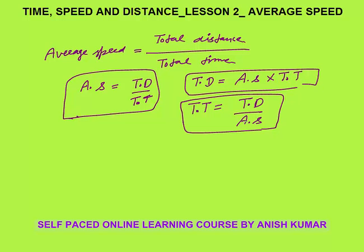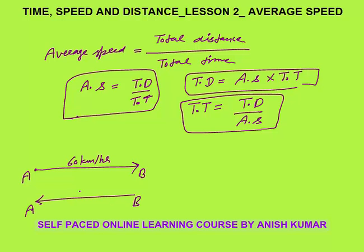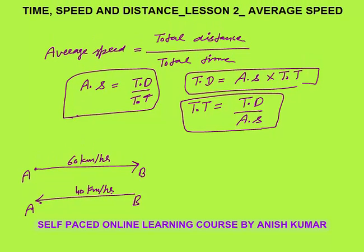Now, what kind of questions can come? A person traveled from A to B at a speed of 60 km/h, and the same person traveled back from B to A at a speed of 40 km/h. What is the average speed of the journey? The answer is not (60 + 40) / 2 = 50 km/h, which most students give as their first instinct.